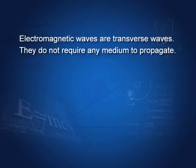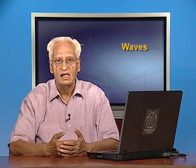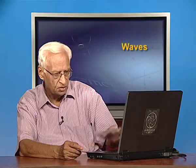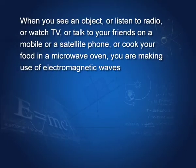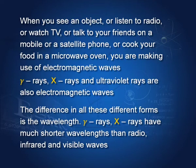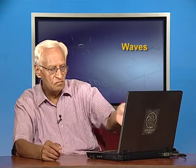Electromagnetic waves are transverse waves. They do not require any medium to propagate — we receive light and heat from the sun, and between the sun and the earth there is almost a vacuum, so they can travel through vacuum. Light and radio waves reaching us from distant objects are all electromagnetic waves. When you see an object, listen to the radio, watch TV, talk on a mobile or satellite phone, or cook food in a microwave, you are all making use of electromagnetic waves. Gamma rays, X-rays, and ultraviolet rays are also electromagnetic waves. The difference among all these forms is the wavelength — gamma rays and X-rays have very short wavelengths, whereas radio, infrared, and visible waves have much longer wavelengths.